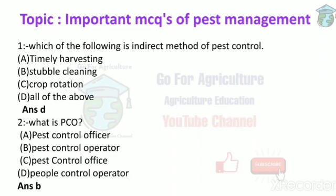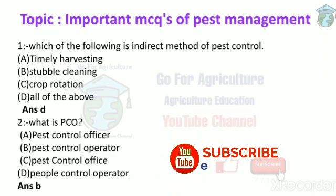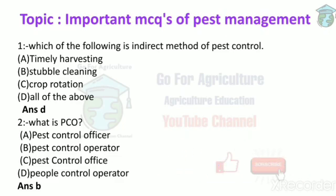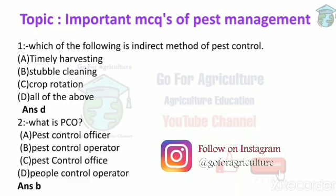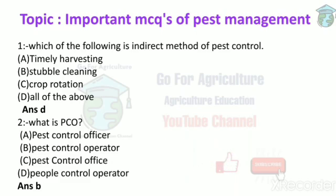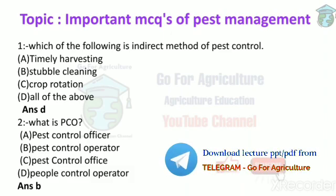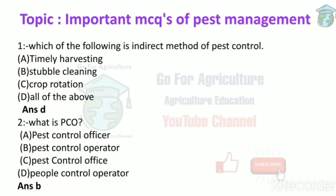The first MCQ: which of the following is an indirect method of pest control? Direct methods include biological control, physical, chemical, legal, and biotechnological. But indirect methods are like timely harvesting, cleaning plant residues, and crop rotation. So these are indirect methods of pest control. The answer is D — all of the above.